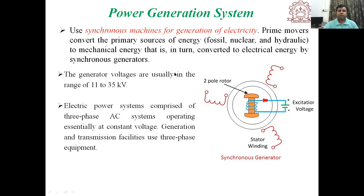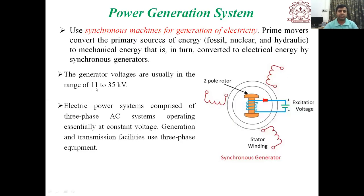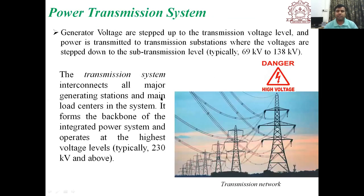The power system overall consists of three main parts: generation, transmission, and distribution. For generation, 60 to 70% of power is generated from thermal power plants. A synchronous machine is used to generate electrical energy from mechanical energy. Generator voltages usually range from 11 to 35 kV. The electrical power system comprises a three-phase AC system operating essentially at constant voltage. The generation voltage is stepped up with the help of a transformer for transmission at reduced losses — transmission is at very high, extra high, or ultra high voltage depending on the power and distance requirements.